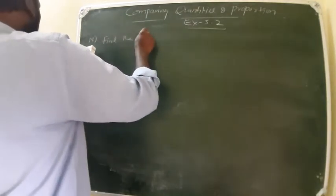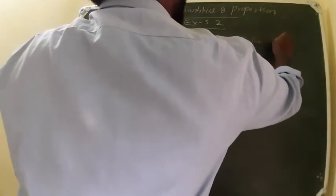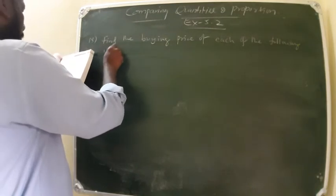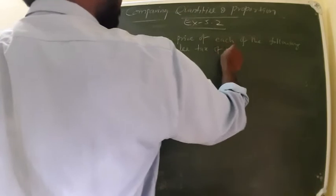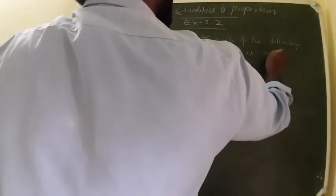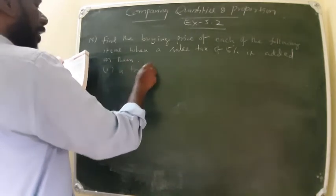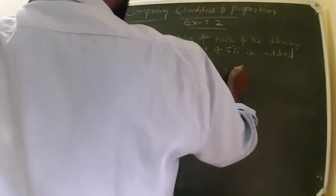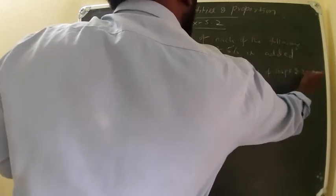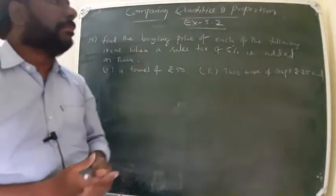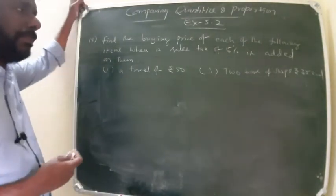Now 15th sum: Find the buying price of each of the following items when a sales tax of 5% is added on them. Sales tax we have to include. First one: a towel of Rs. 50. Second one: two bars of soaps, Rs. 35 each. Find the buying price when sales tax is 5%, so we have to include the sales tax to the given price of the item.